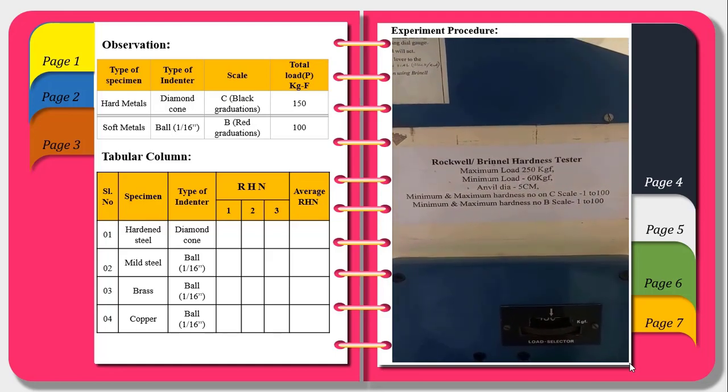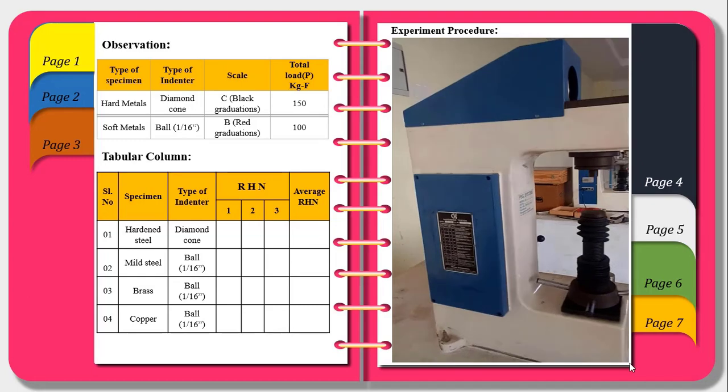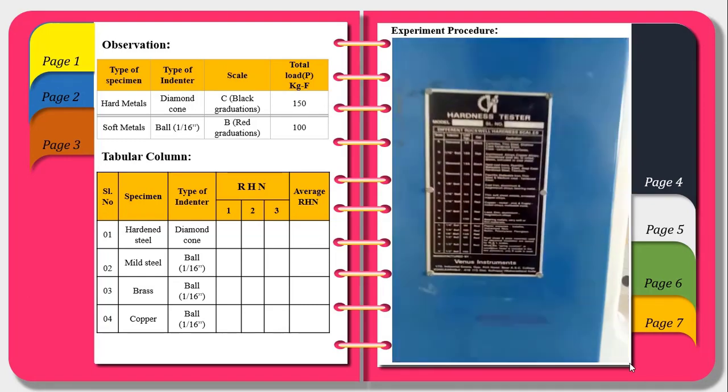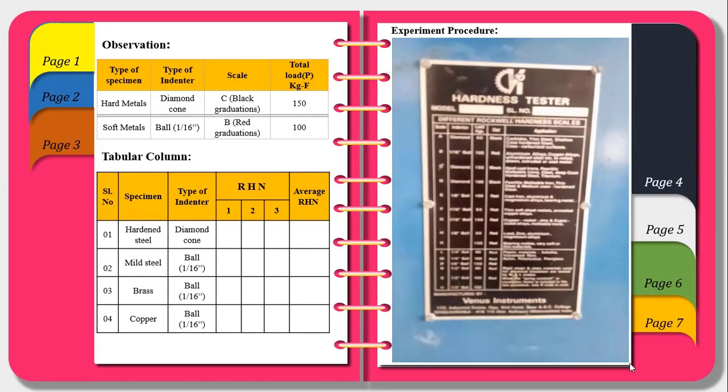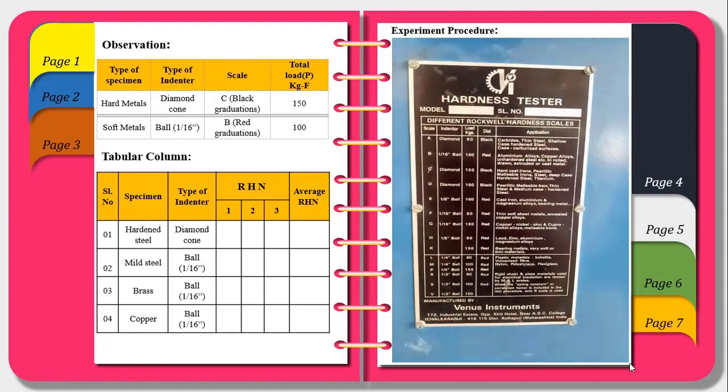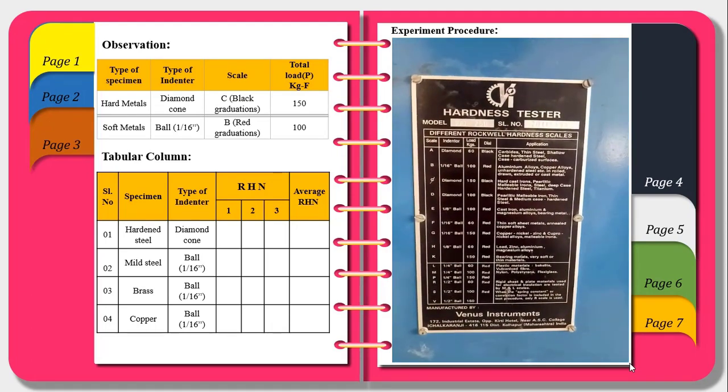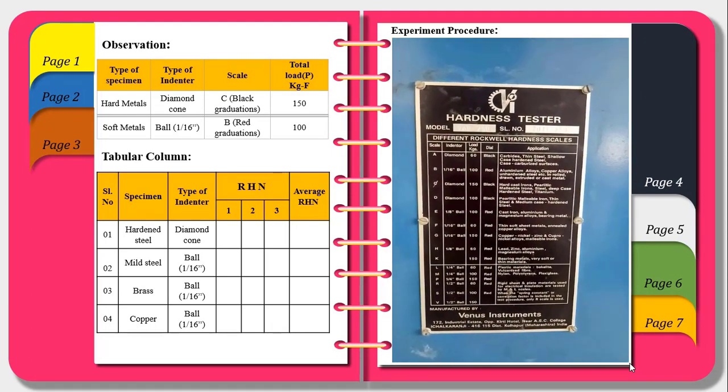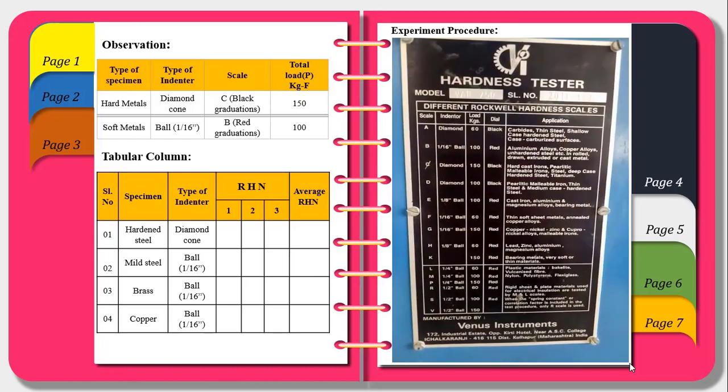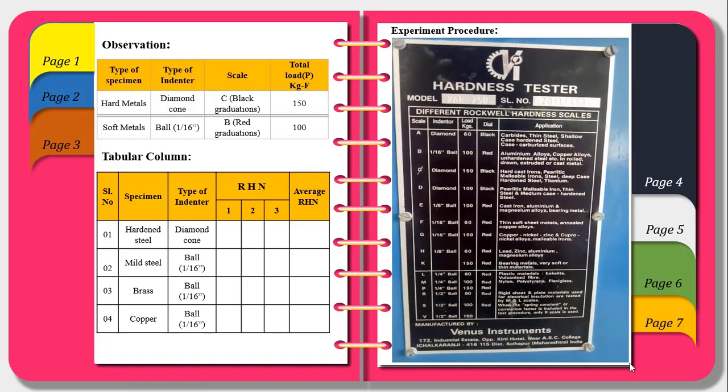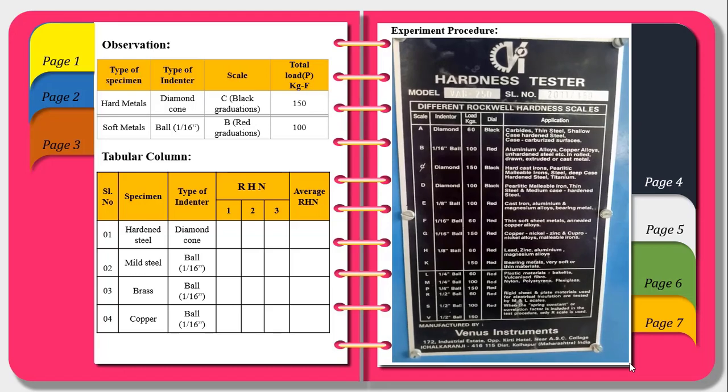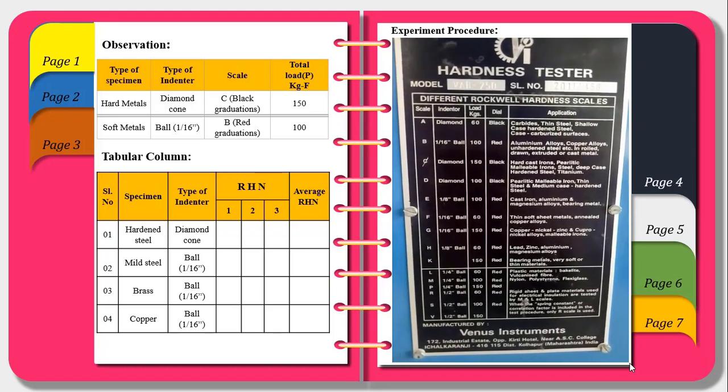On the other side of the equipment we can observe the chart where it mentions the type of indenters used and the maximum load which we can apply and the graduations on the dial which we should observe to take readings. And particular applications has also been mentioned over here.